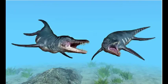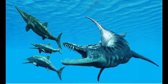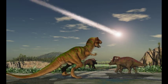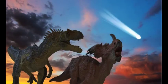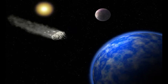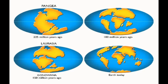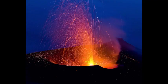Next, we come to the Permian-Triassic Extinction, also known as the Great Dying. Occurring about 252 million years ago, this was the largest mass extinction event in Earth's history. A combination of volcanic activity, climate change, declining oxygen levels, and acidifying oceans resulted in the extinction of approximately 96% of marine species and 70% of terrestrial species.